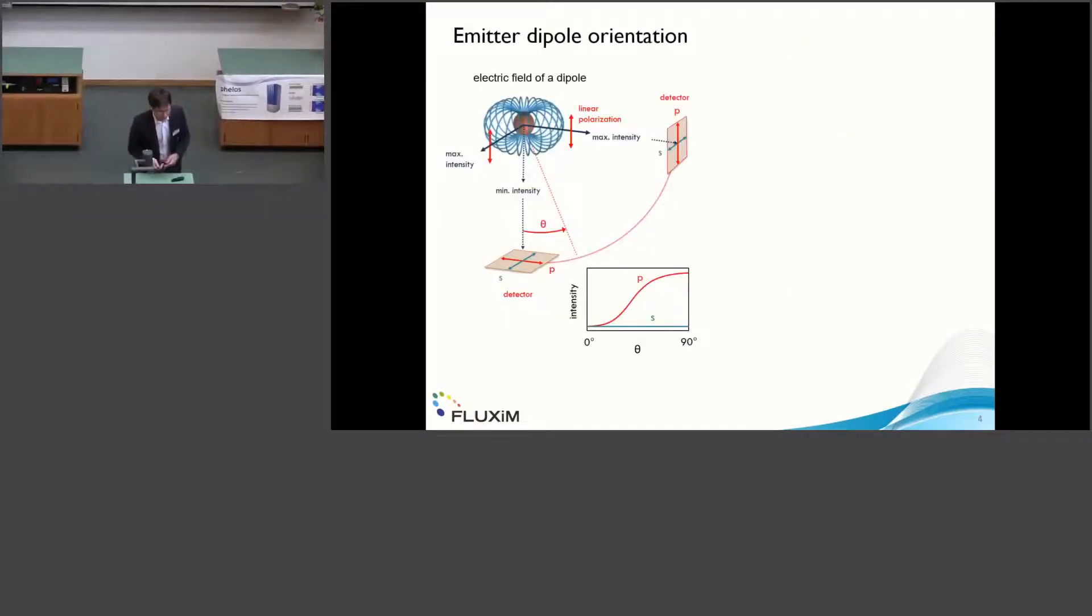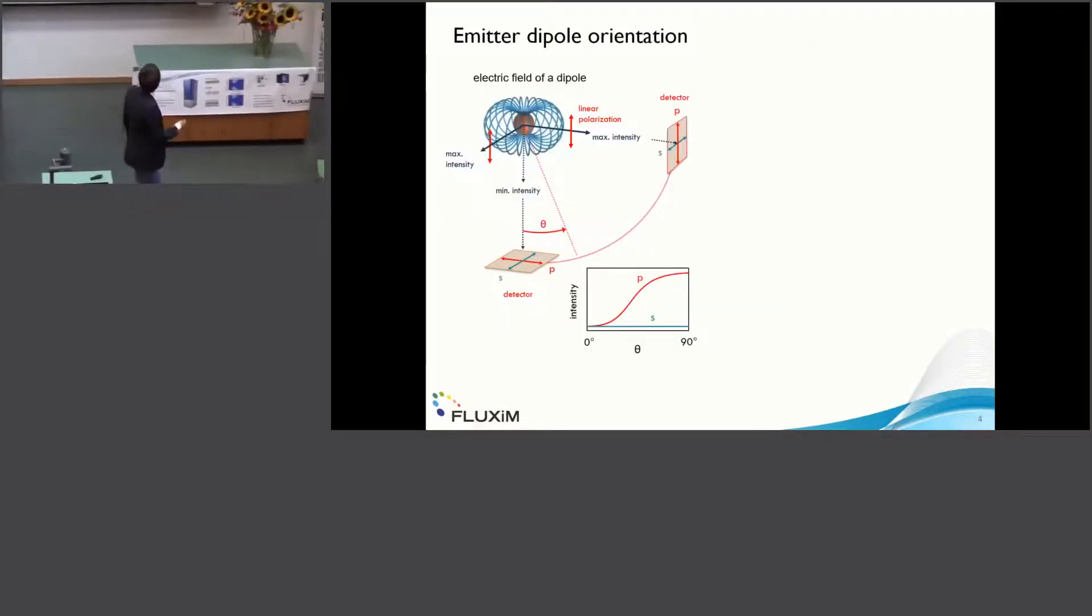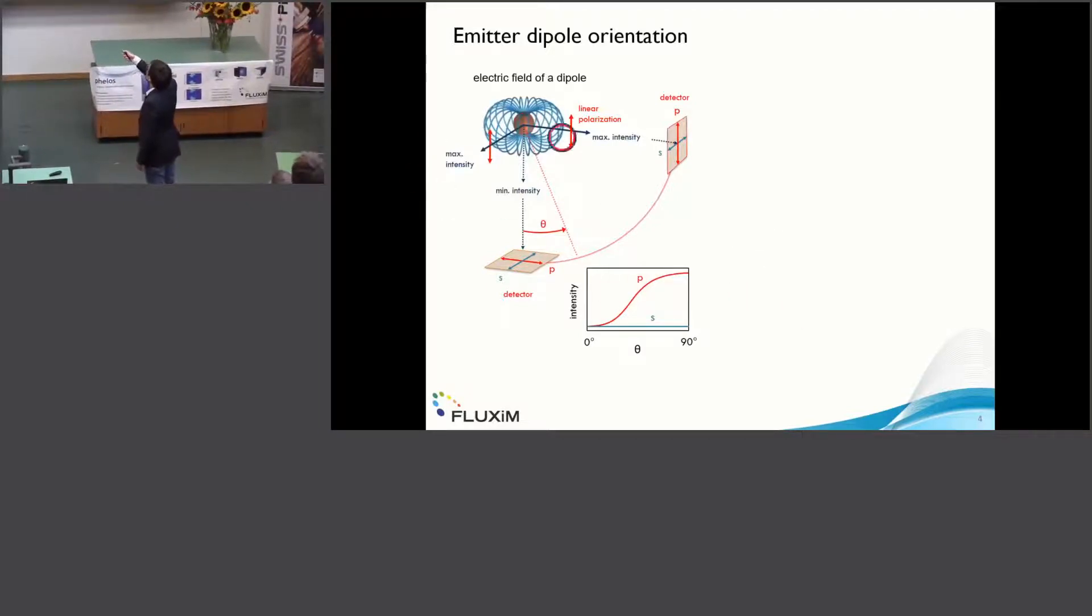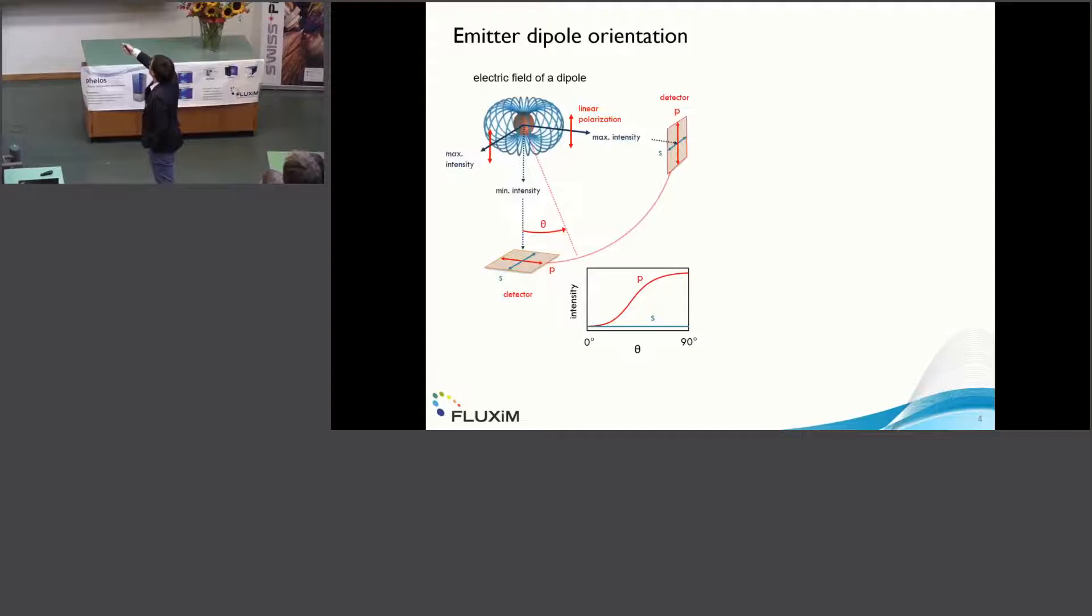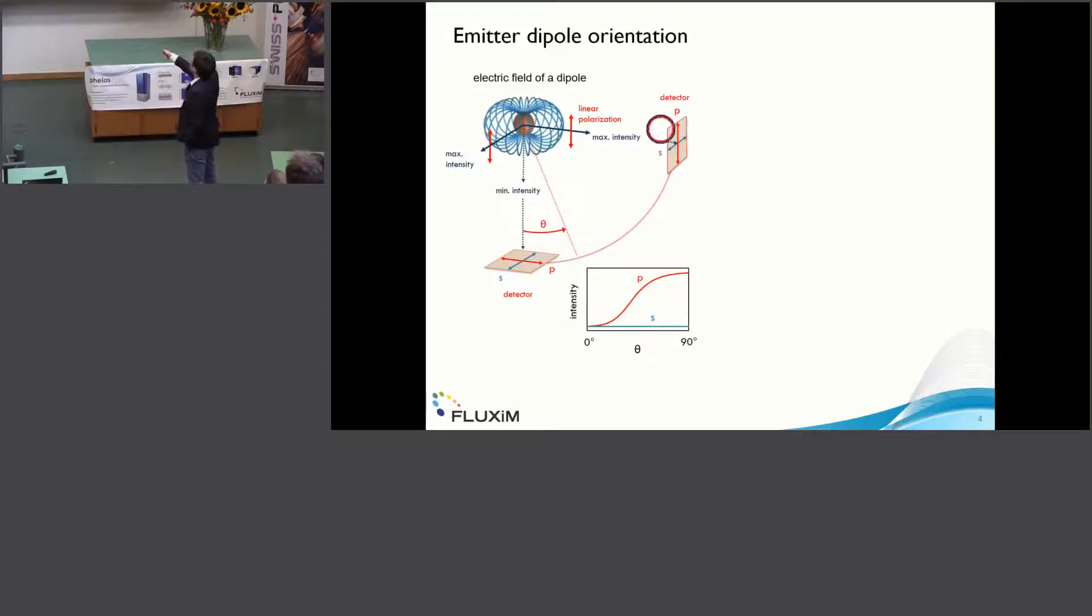Just as a reminder, if we have a vertically oriented dipole, the dipole is oriented in the Z plane, so the maximum intensity would be in the X and Y plane, and the light is actually linearly polarized. If we now imagine that we have a detector with a polarizer filter, so we can look at the P-polarized and S-polarized intensity, then we would have the minimum intensity at zero degrees, and if we now move the detector around the dipole, we would have an increasing signal in the P-polarized emission.